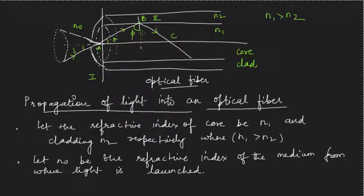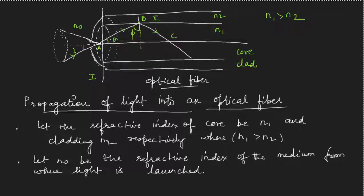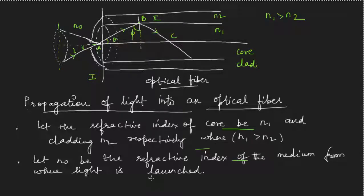This is very simple to derive. If the light is being launched at angle i and I rotate this ray around the central axis to find the locus of all such rays, I get a cone, which forms a circle at the fiber face. So the light is being launched at angle i forming this cone.